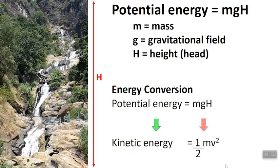Let me explain the theory behind hydropower. As you know, the potential energy is due to the gravitational field, that is Mgh. M is the mass, G is the gravitational field, and H is the height or effective head.